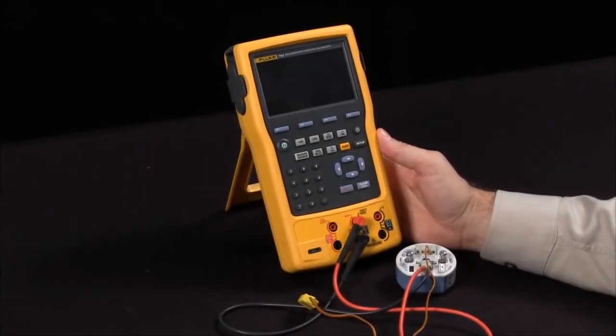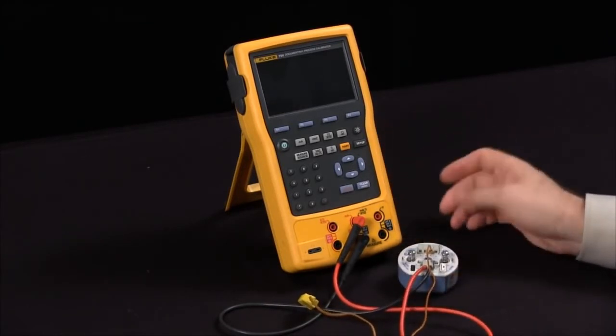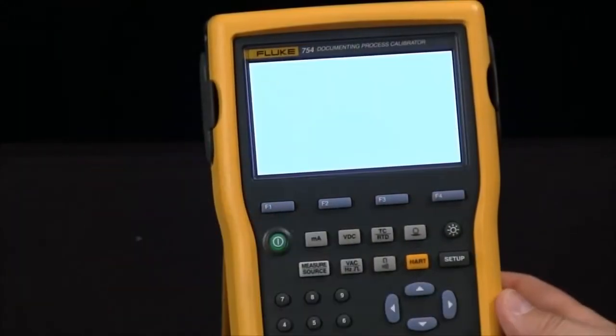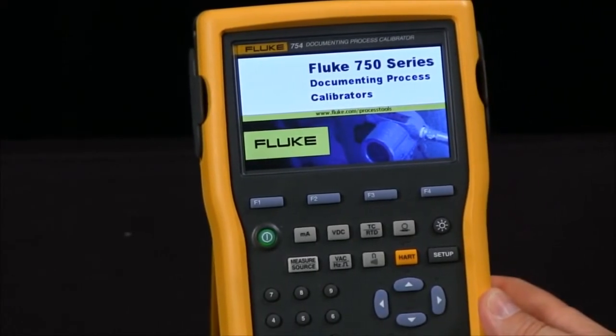Today I'm going to show you how to communicate via HART protocol and to perform a simple calibration with a 644 Rosemount temperature transmitter. I will power on the 754 and as it goes through its initialization process.